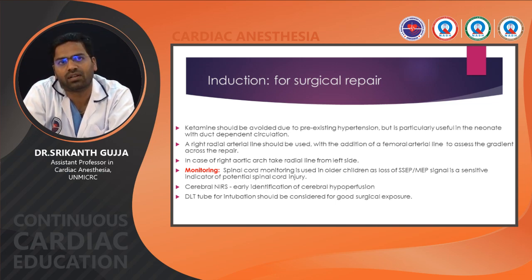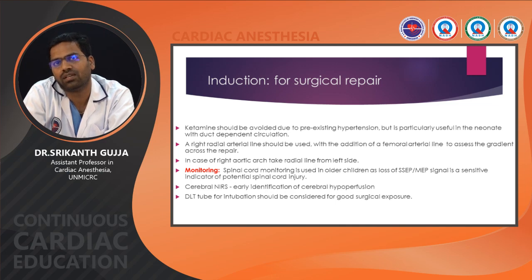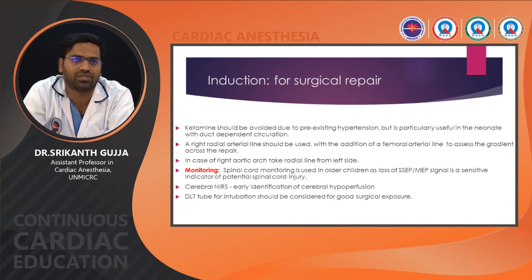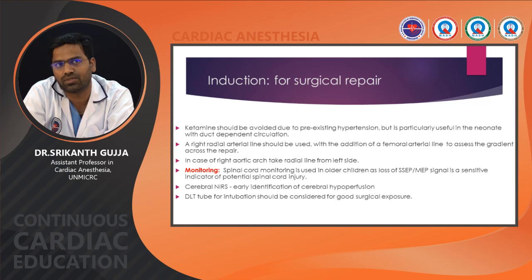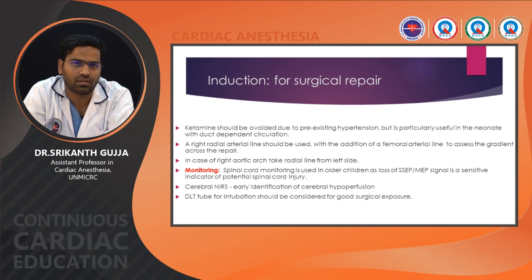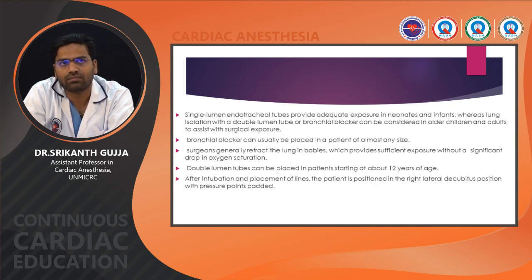Spinal cord monitoring is used in older children, as loss of somatosensory and motor evoked potential signals is a sensitive indicator of potential spinal cord injury. Cerebral NIRS is used for early identification of cerebral hypoperfusion. A double-lumen tube for intubation should be considered for good surgical exposure in adults. In pediatric patients, a single lumen tube with endobronchial intubation can provide one-lung ventilation, or a bronchial blocker can be used.